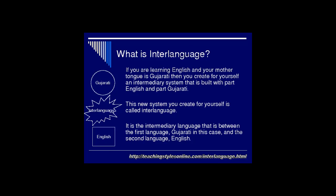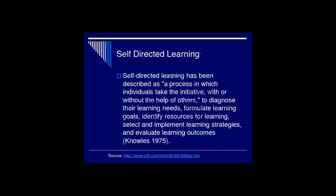In the next slide, you are going to see what interlanguage is. If your mother tongue is Gujarati and you are learning English as the second language, you cannot achieve native speaker competence in English right from the beginning. So in between, you create for yourself a language that is intermediary between Gujarati and English — that is called the interlanguage. Whoever learns a second language is going to develop this intermediary language.